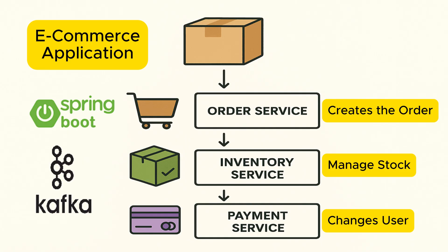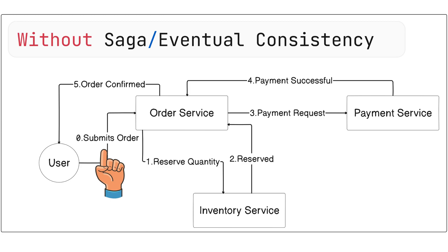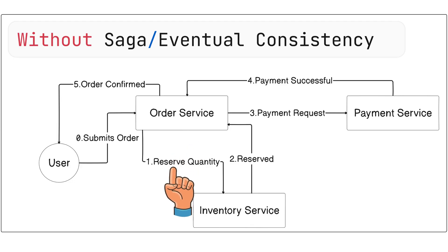When a user submits an order, let's understand what happens without Saga. The order goes to the order service, which then initiates a full transaction synchronously. It first makes a synchronous call to the inventory service to reserve the required quantity of the product for which the order is placed.